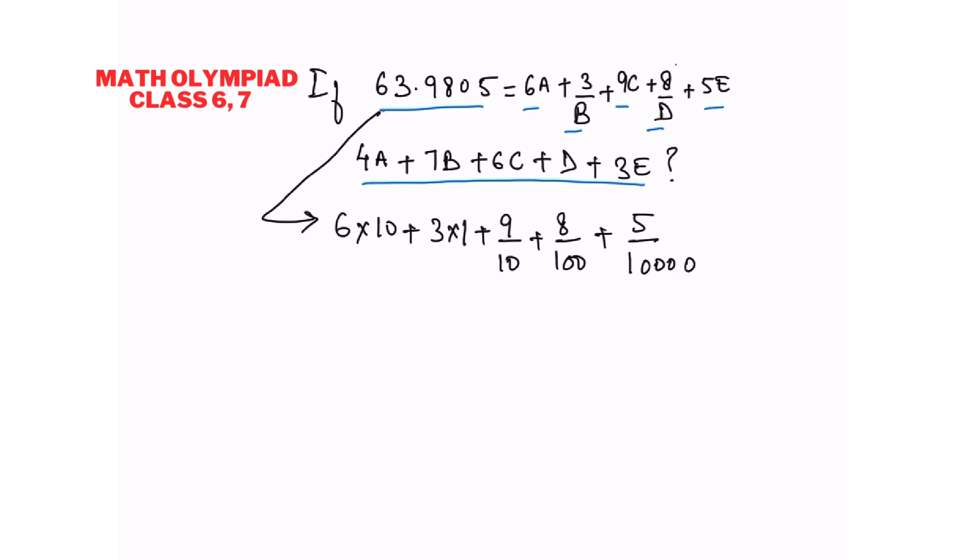So we just need to compare. 6a is equal to 6 times 10 so our a is 10. 3 by b is equal to 3 so b is equal to 1.